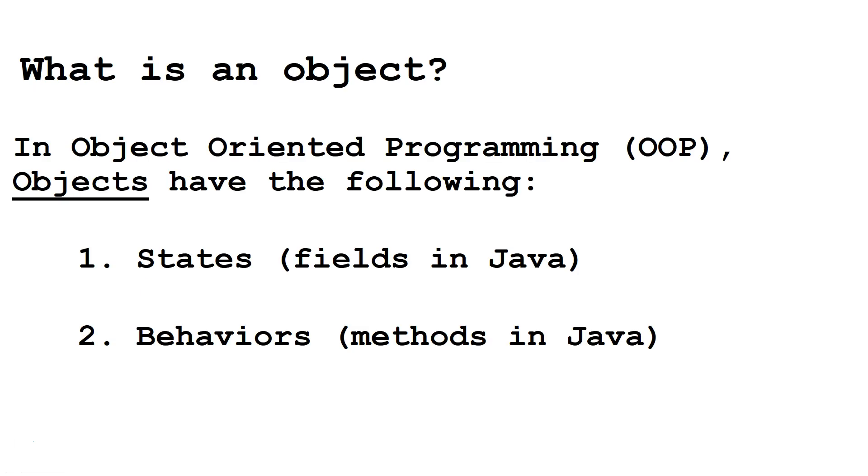So what is an object? In object-oriented programming, objects have the following. They have states, and we do that with fields in Java. And they have behaviors, and we do that with methods in Java.